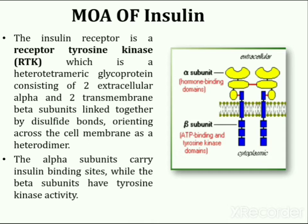Insulin acts on specific receptors located on the cell membrane of practically every cell, but their density depends on the cell type. For example, liver and fat cells are very rich in insulin receptors.